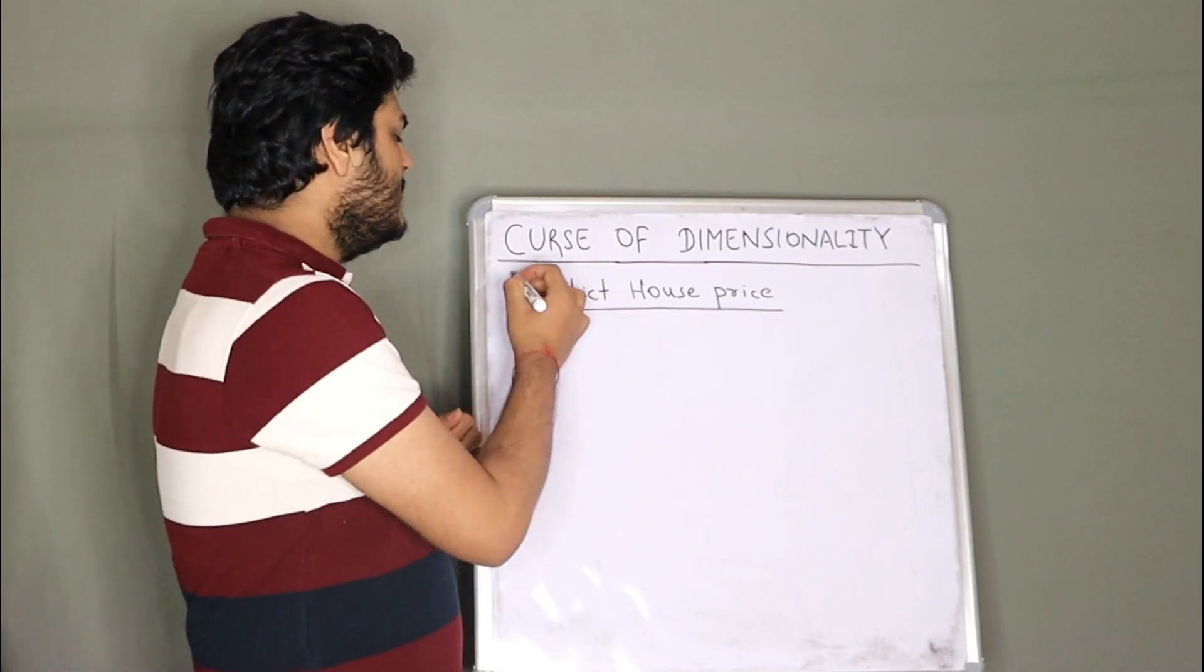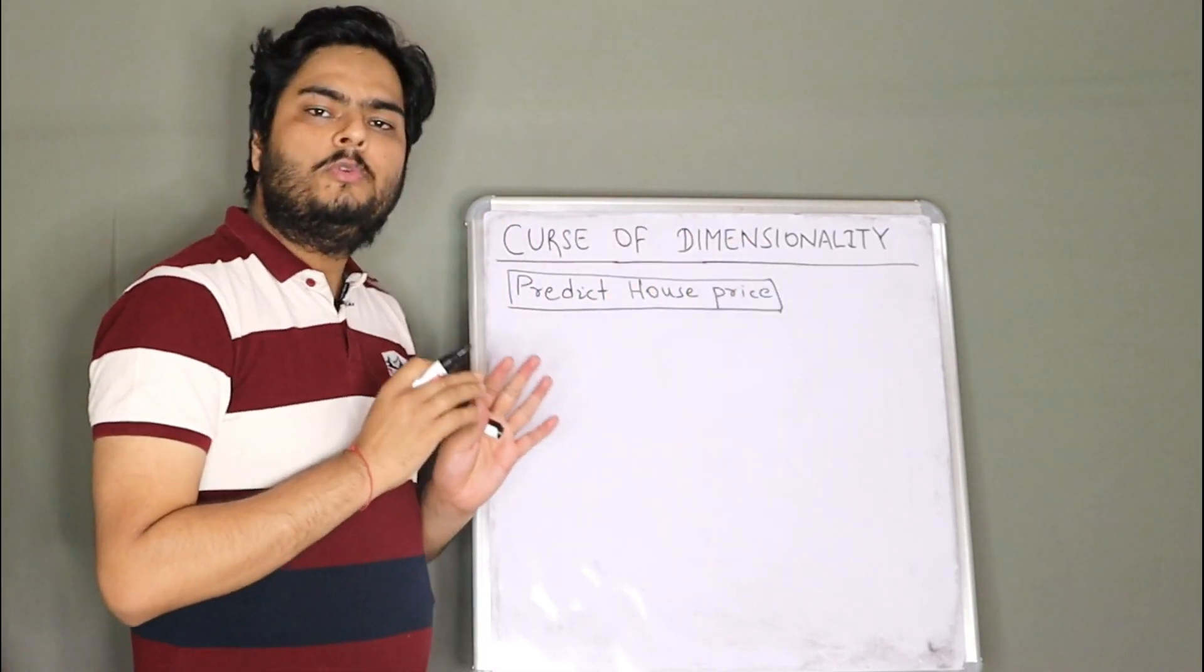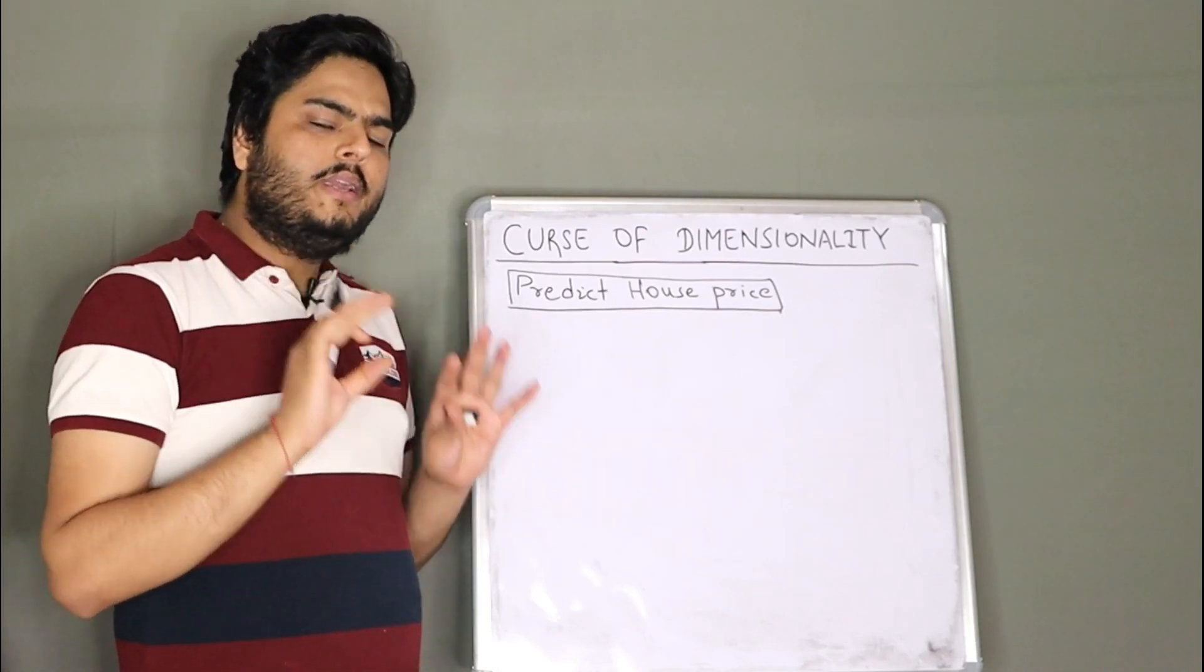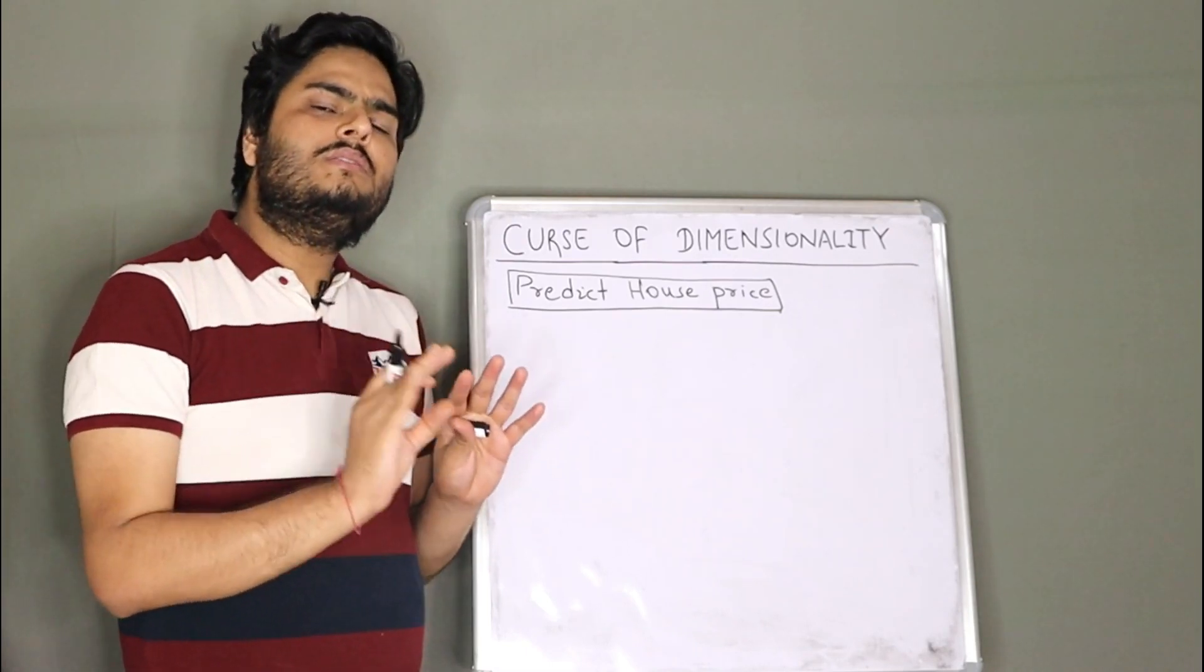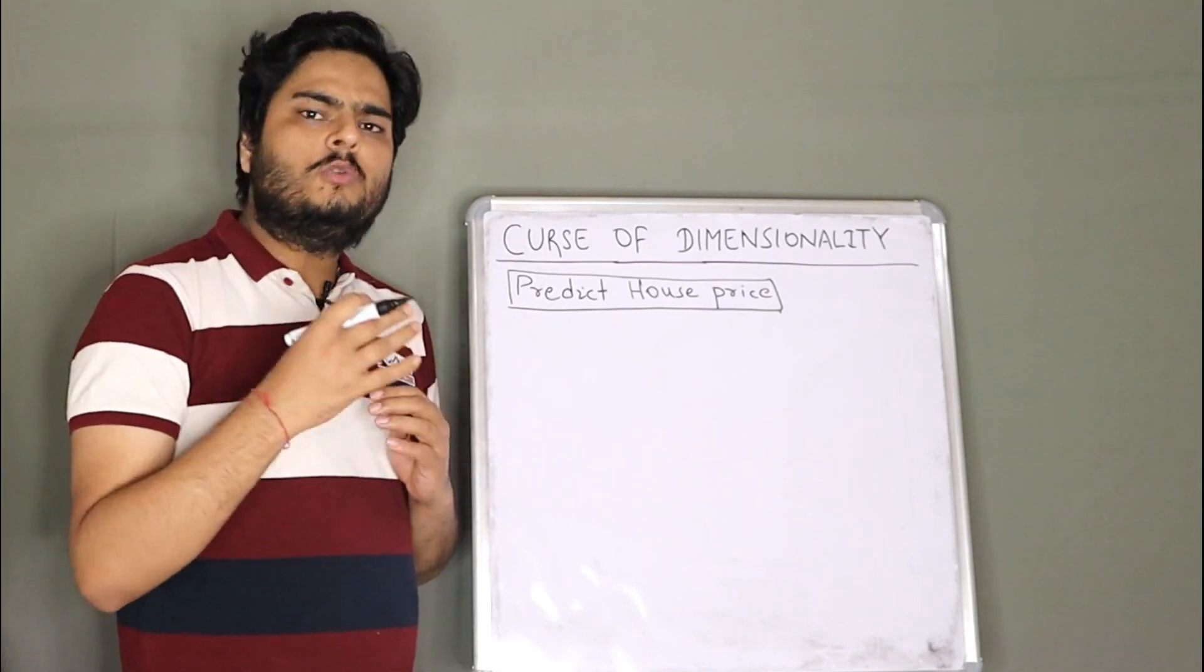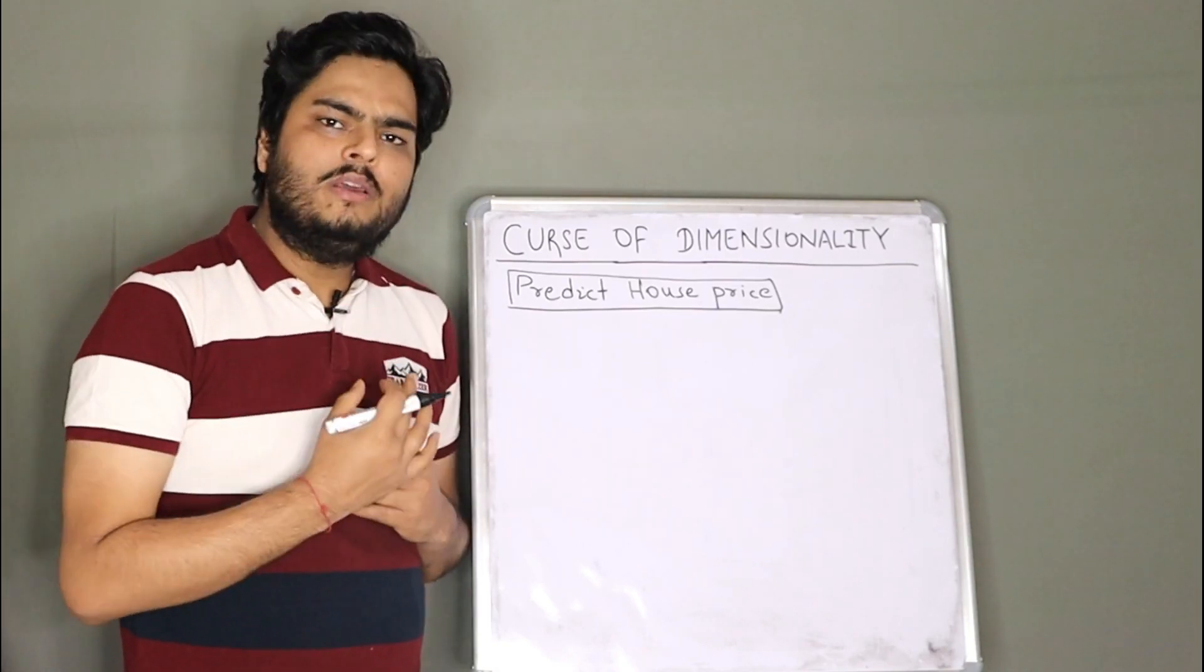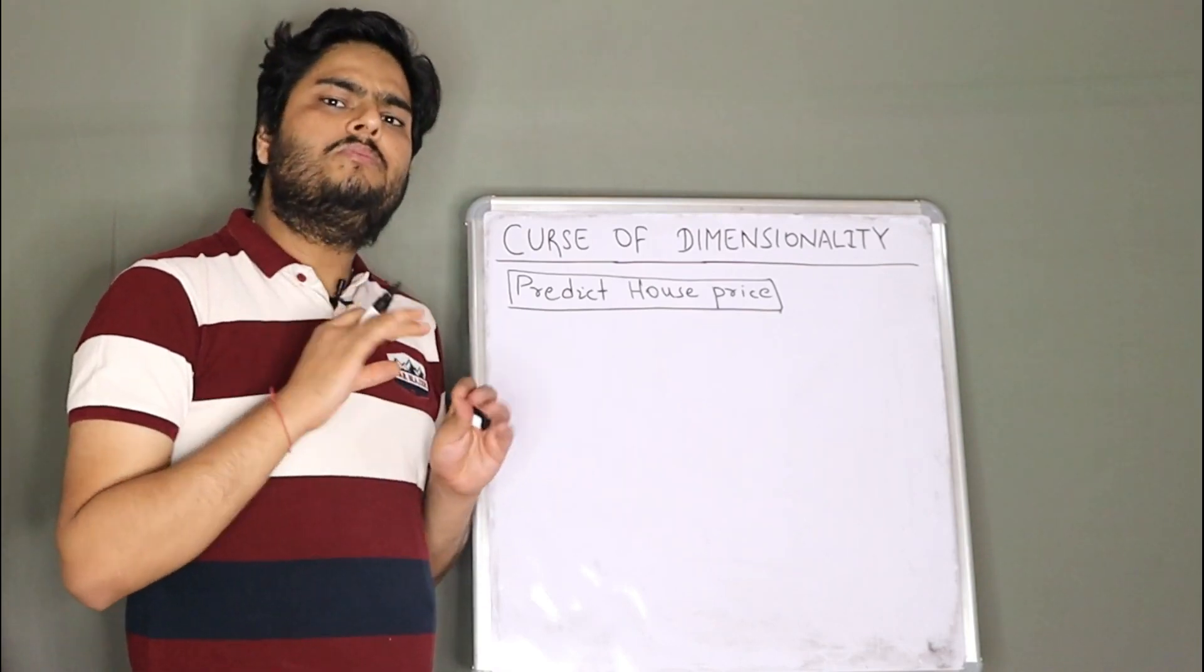First of all, let us take a simple use case. So you have to predict house price. If I tell you in Bangalore, India, can you predict the house price of a house given some input features? So what are the input features you will ask me? You will tell me, hey Aman, there are no features. So how can I train the model? Give me some features, right?